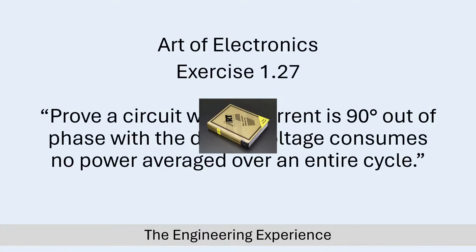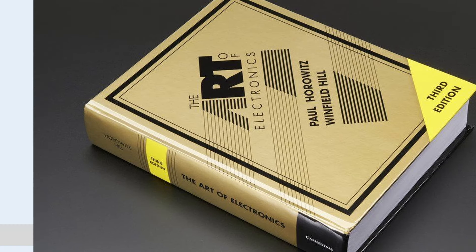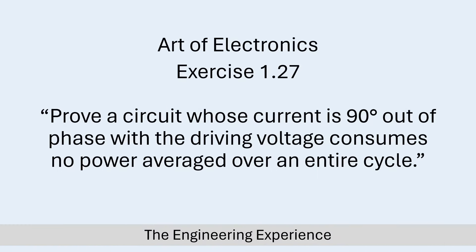Hello and welcome back. In today's video I'm going through exercise 1.27 from The Art of Electronics. In this exercise we need to prove that a circuit whose current is 90 degrees out of phase with the driving voltage consumes no power when averaged over an entire cycle. Firstly I will go through this exercise in a visual form to better understand what we are doing when we go over the maths.